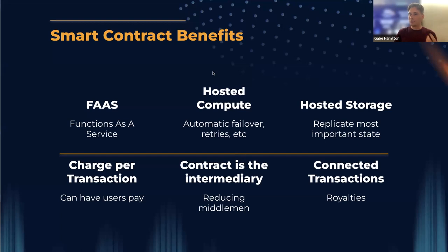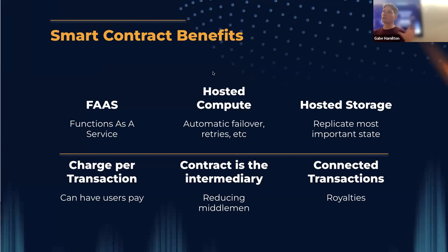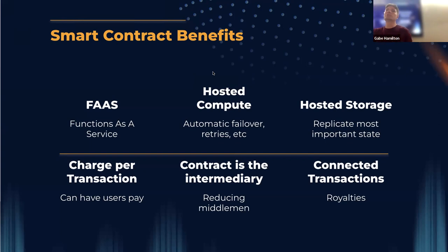Another thing that's really easy with smart contracts and hard in other contexts is connecting transactions. We've seen this with NFT art where there are royalties — you sell it to someone, they sell it to the next person, and you can build into that smart contract mechanism so the original artist gets royalties at each step along the way. You can connect other transactions in a similar manner.